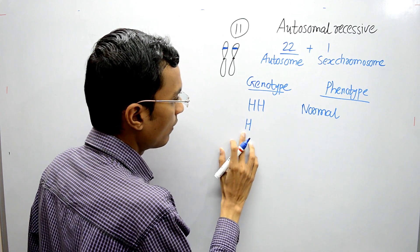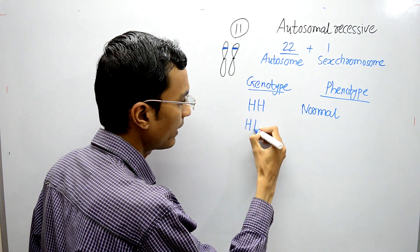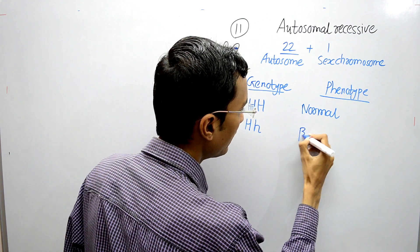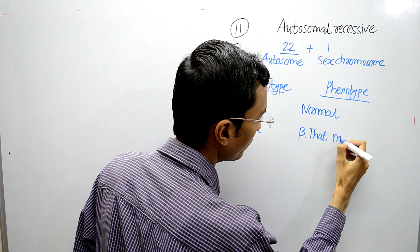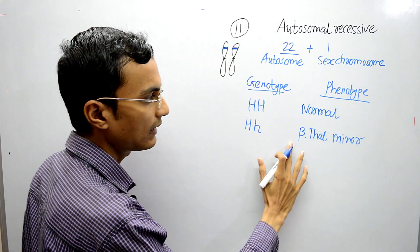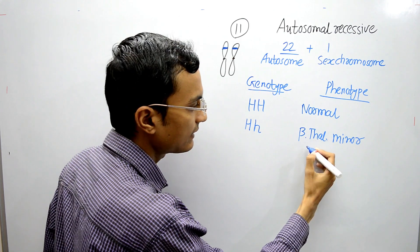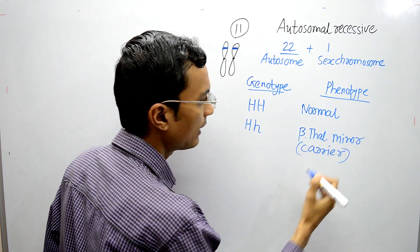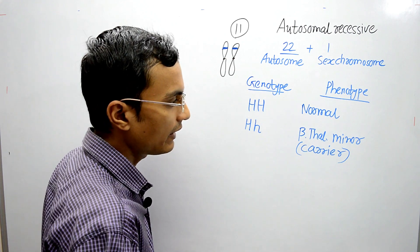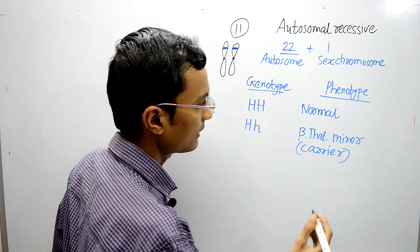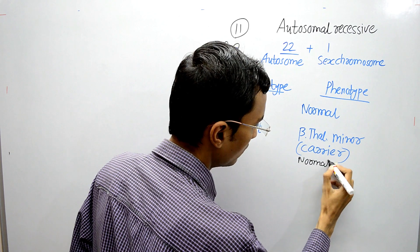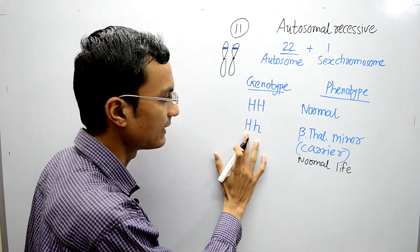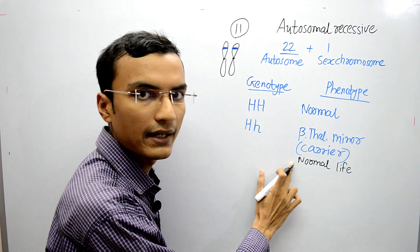The next case is when one gene is functional and the other gene is affected — it has some kind of mutation. For this genotype, the phenotype is called beta thalassemia minor. The person having beta thalassemia minor acts as a carrier for beta thalassemia. Since one gene is functional, the person can produce some beta globin, is asymptomatic, and can live a normal life.